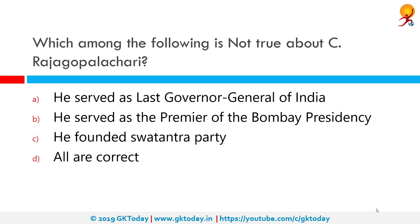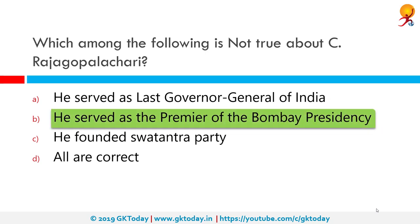Which among the following is not true about C. Rajagopalachari? The correct answer is that he served as the Premier of Bombay Presidency — this is incorrect. He actually served as Premier of Madras Presidency and Governor of West Bengal.